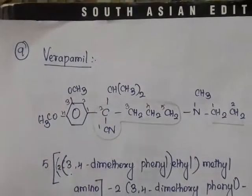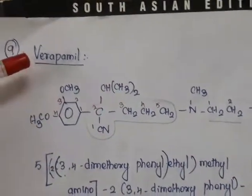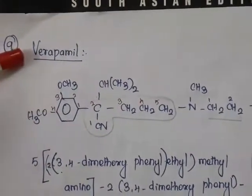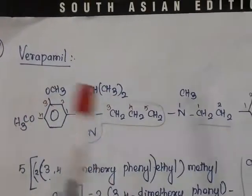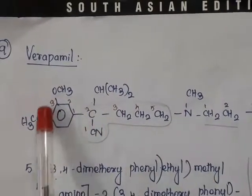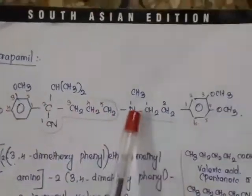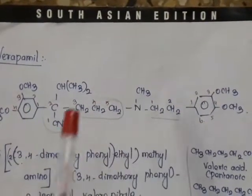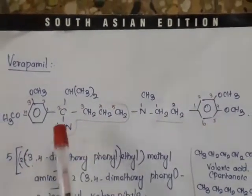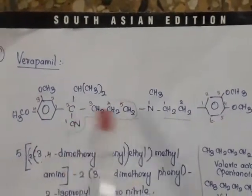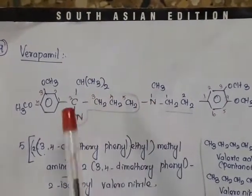Now we will see another drug called verapamil. It is also a calcium channel blocker, but it is coming under phenylalkylamine. This portion is phenyl and this is alkylamine. So it is coming under phenylalkylamine type calcium channel blocker.